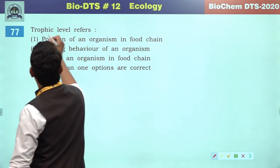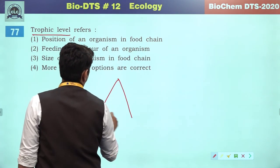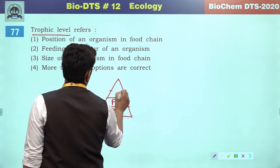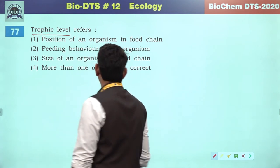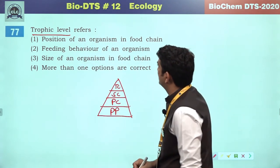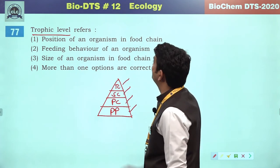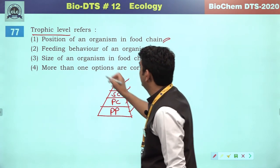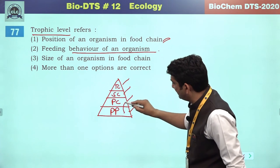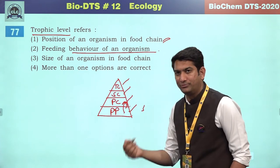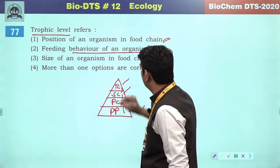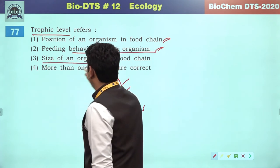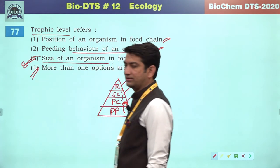Trophic level refers to — in any ecosystem or food chain, we have primary producer, primary consumer, secondary consumer and top consumer. These are trophic levels. Trophic level refers to the position of an organism in the food chain and the feeding behavior of an organism. Size of an organism is not a relevant reference. So the correct answer will be the fourth option.